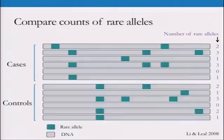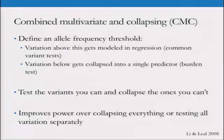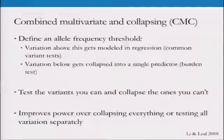A more tricky approach is to count all the common SNPs the normal way and collapse all the rare ones. You set some threshold — say 1%. Everything above 1%, you do your normal common variant association techniques. Everything below 1%, you collapse together in some way. You're testing what you can and collapsing what you can't. This has more power to detect association than either testing each locus by itself or collapsing everything together.